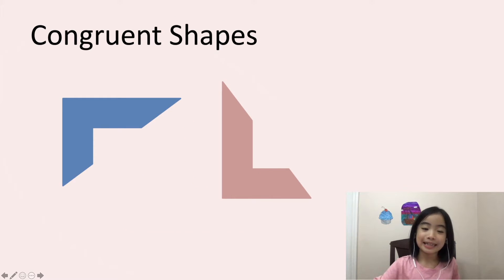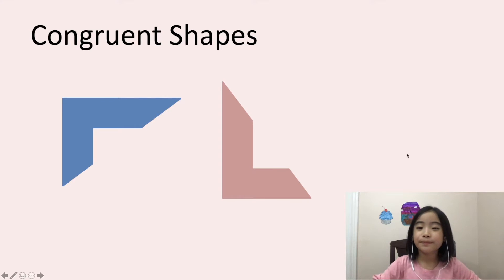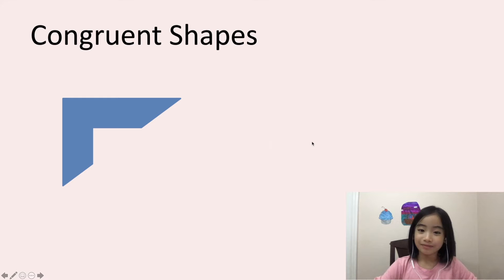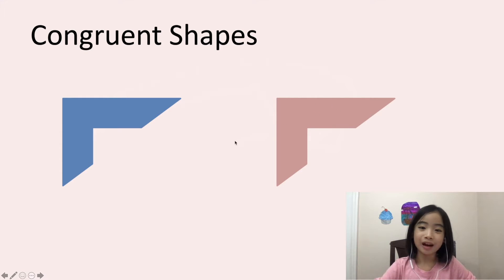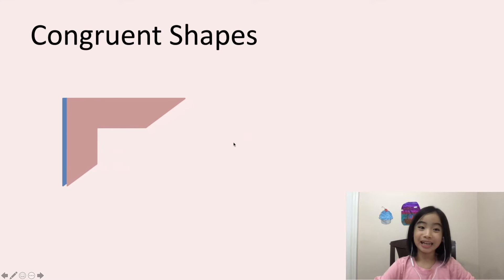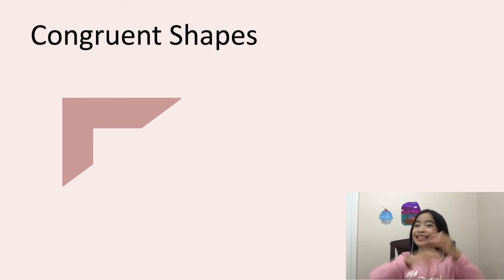Now let's look at these shapes. Are they congruent shapes? This one is a little tricky. So if I flip the pink one, it looks like the blue one. And now if I slide the pink one on top of the blue one, it matches perfectly. So these two shapes are congruent.